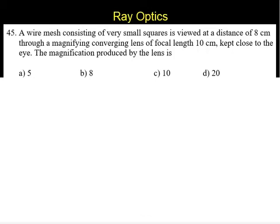Question number 45. A wire mesh consisting of very small squares is viewed at a distance of 8 cm through a magnifying converging lens of focal length 10 cm kept close to the eye. The magnification produced by the lens is. Alternatives are 5, 8, 10, and 20.